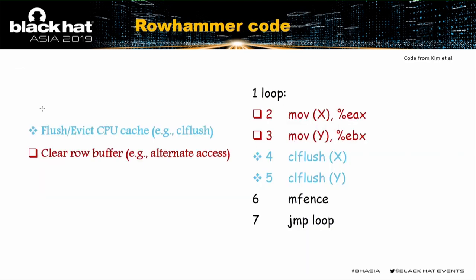The critical Rowhammer code written by Kim is shown on the right. Assuming X is in row N+1 and Y is in row N-1, to induce bit-flips in row N we must access X and Y in a loop, flushing X and Y's cache and also the row buffer. To flush the CPU cache we can use the clflush instruction, or evict target data by loading other data. We also perform alternating accesses to X and Y repeatedly to clear the row buffer. Note that the mfence instruction in line six is unnecessary to induce bit-flips, as also reported by Seaborn.